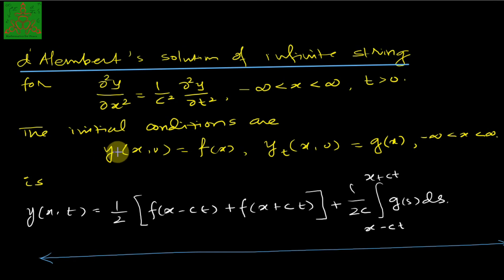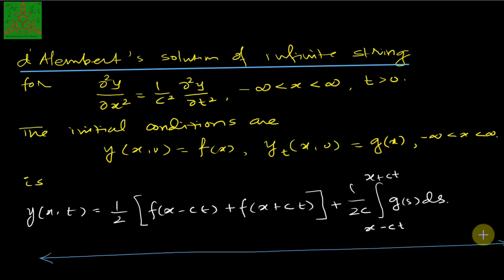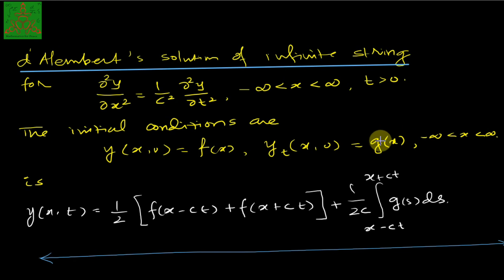The problem is stated like this: if you have a wave equation where x is between minus infinity to infinity and t is greater than 0, then an infinitely long string is given. The initial condition means that at time t equal to 0, the displacement is f of x, and the velocity is g of x. We came to the conclusion that the solution is of this form, known as the d'Alembert solution.